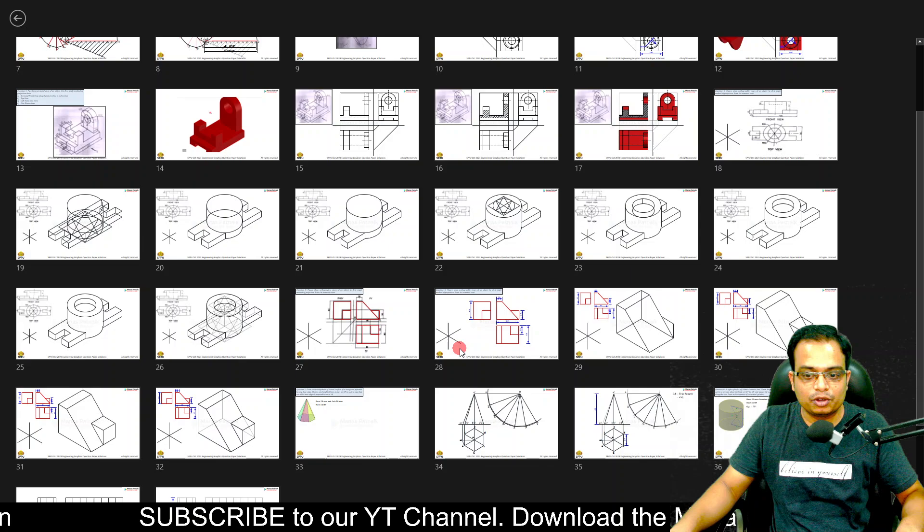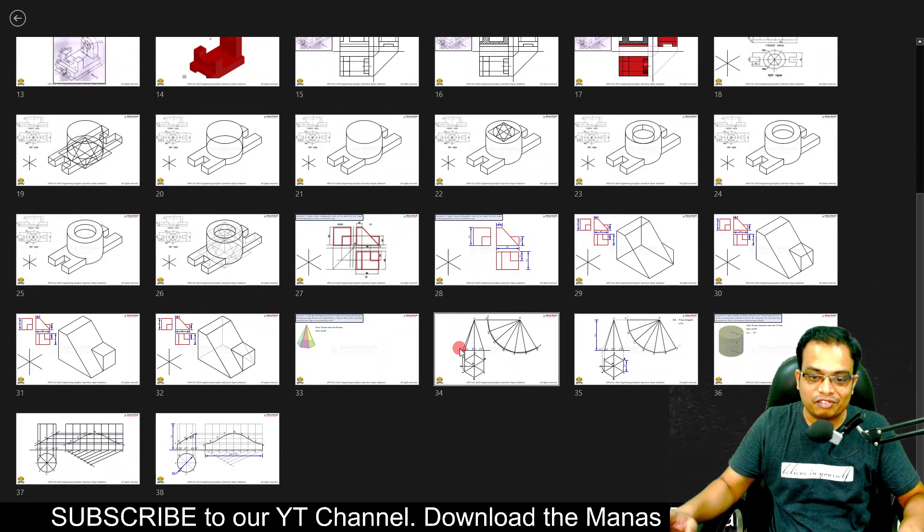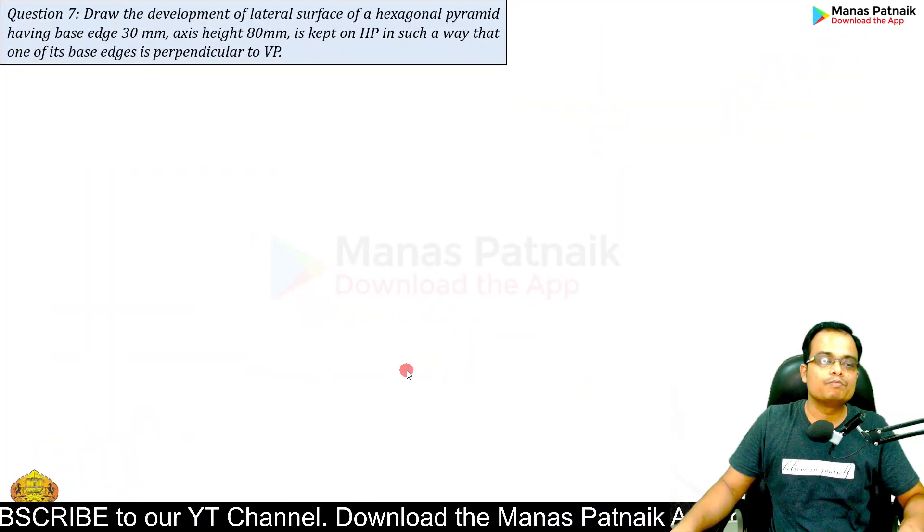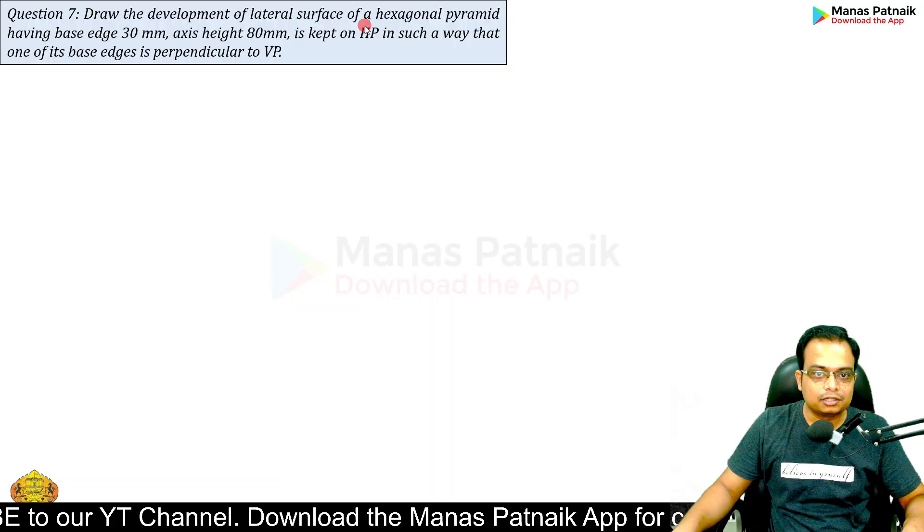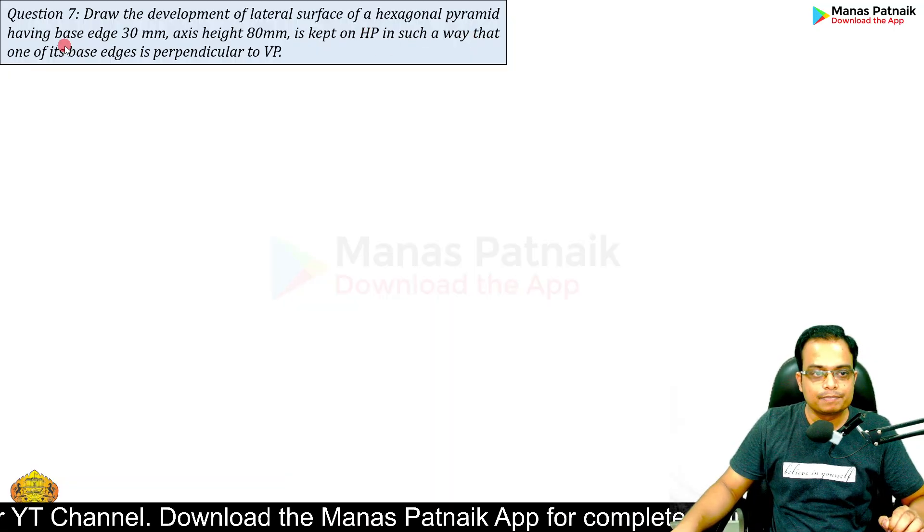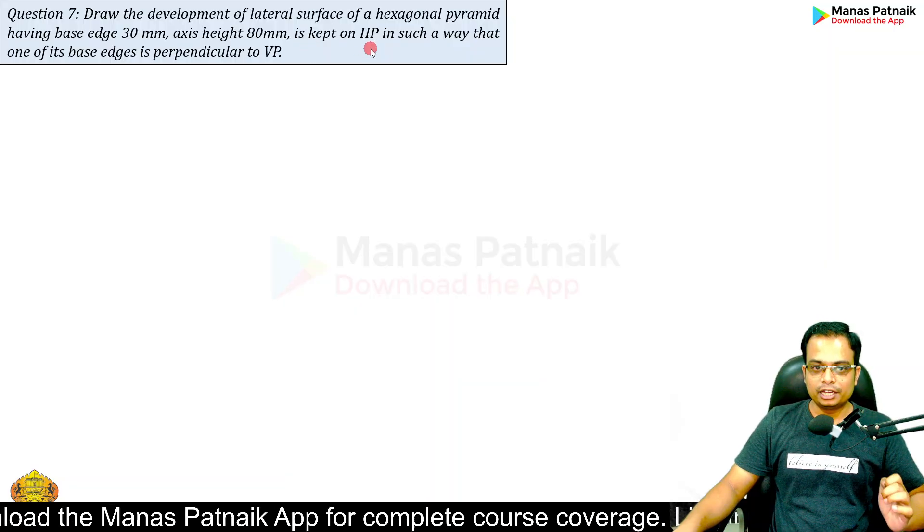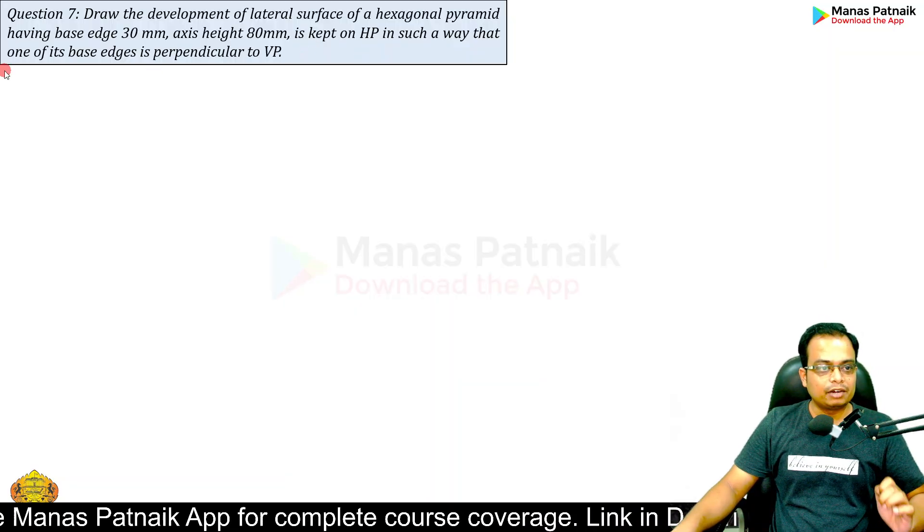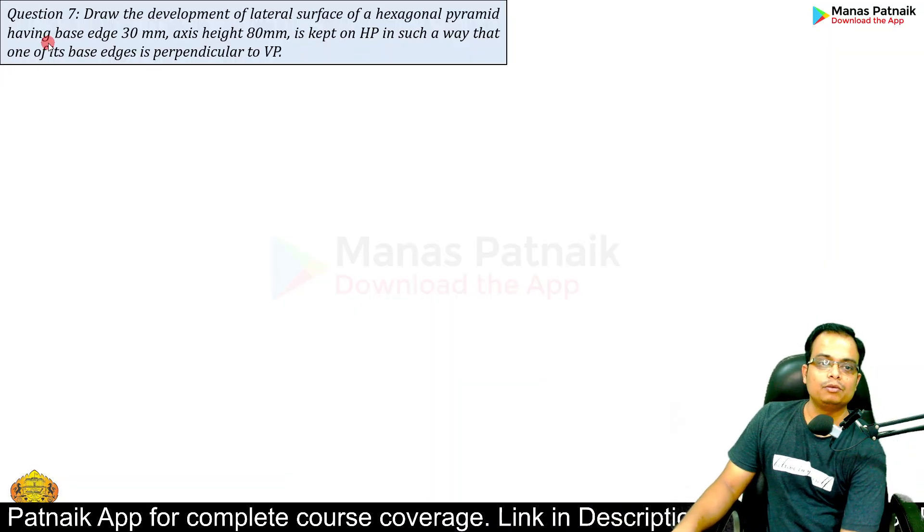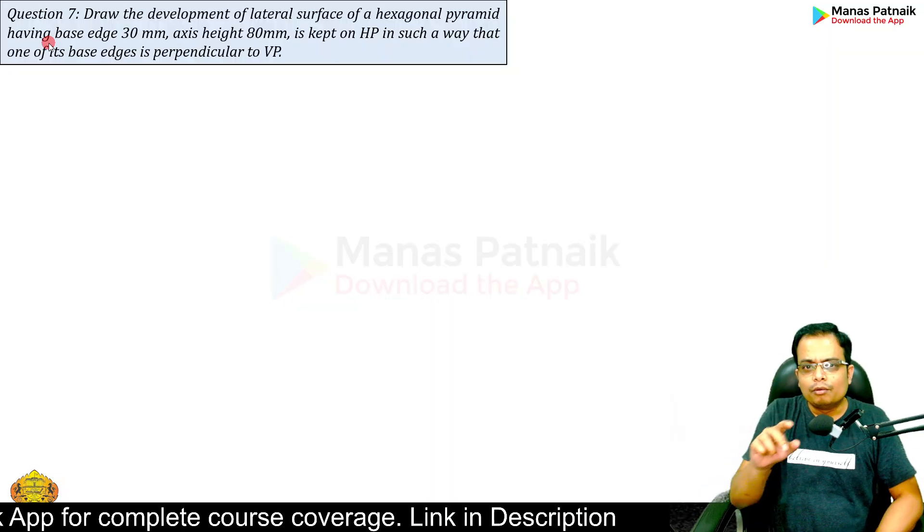Let me read the question - we'll do this in less than five minutes. Draw the development of the lateral surface of a hexagonal pyramid having base edges 30mm and axis height 80mm, kept on HP in such a way that one of the base edges is perpendicular to VP.